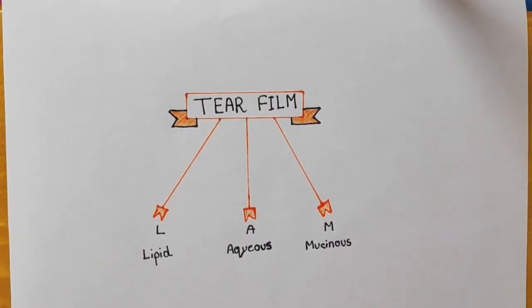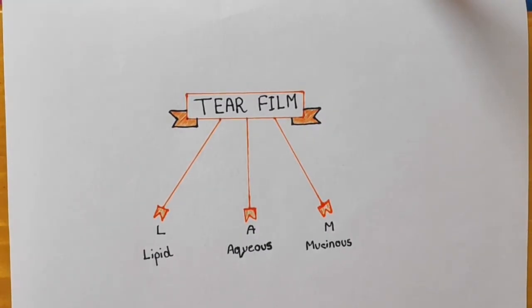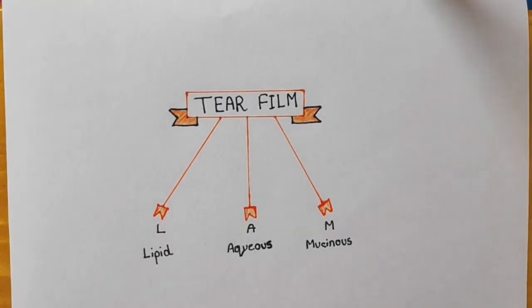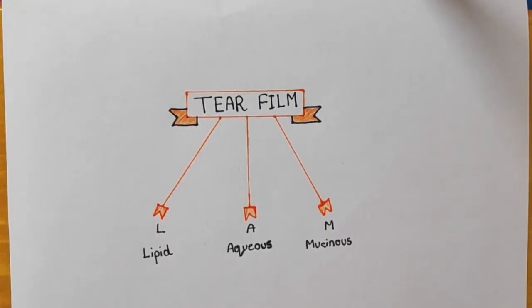Hello everyone, welcome to MedSmashers. Today I am going to talk about tear film. So let's start. In front of the cornea there is a thin layer of fluid which is known as tear film or pre-corneal tear film.